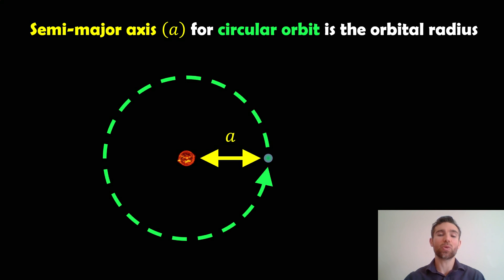So the distance between those two objects on its orbit will always be the same if the orbit is circular. So the semi-major axis is that distance between the two objects at all times, if it's a circular orbit.